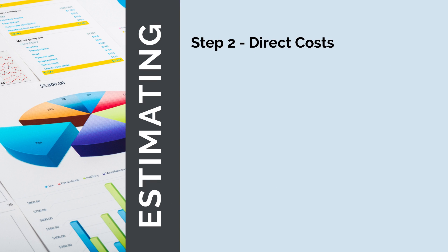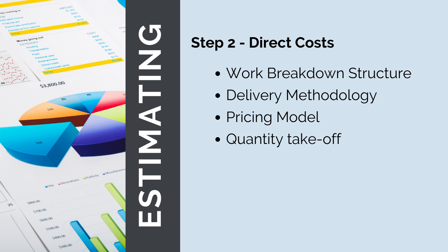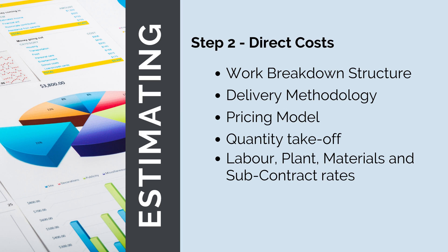Step two is to calculate our direct costs — the costs associated with completing all the project scope. Now that we have a good understanding of our project scope, we need to complete our work breakdown structure, breaking the project down into component pieces to fully understand all the work to be done. Next, we'll establish our delivery methodology: the best way to deliver all this scope. Once we've worked out whether we'll be subcontracting or self-performing the works and the commercial arrangement, we can calculate our direct costs. We'll set up our pricing model, complete a quantity takeoff, calculate labour, plant, material and subcontract rates, then estimate productivities to calculate total costs for each activity, combining them to get our overall direct costs.